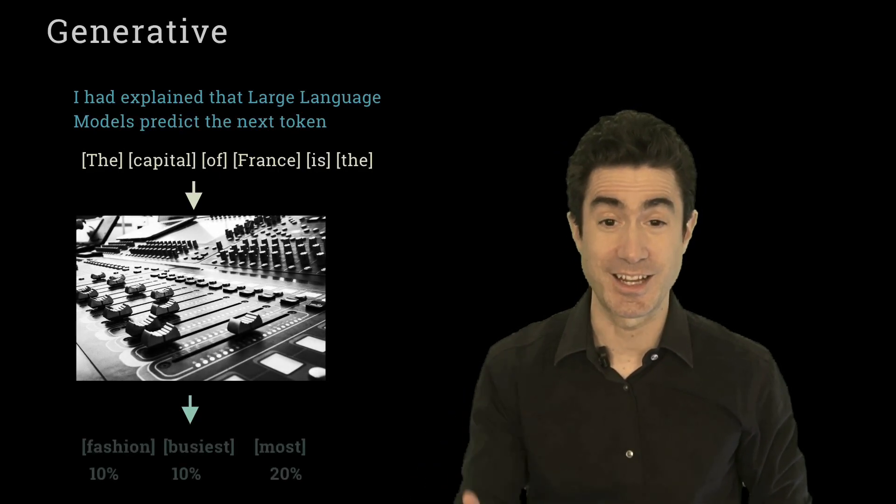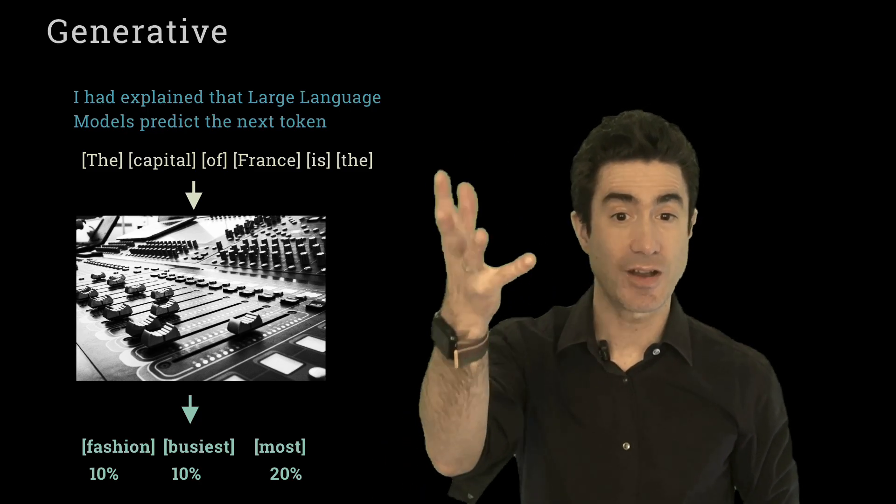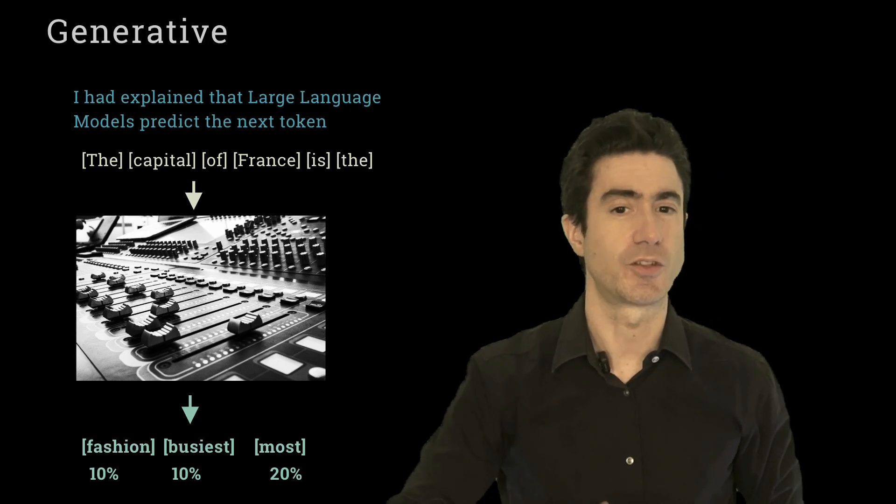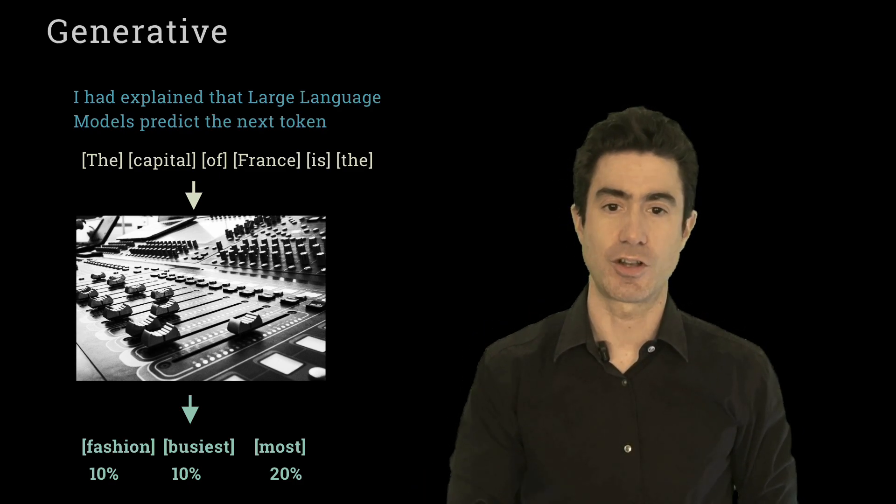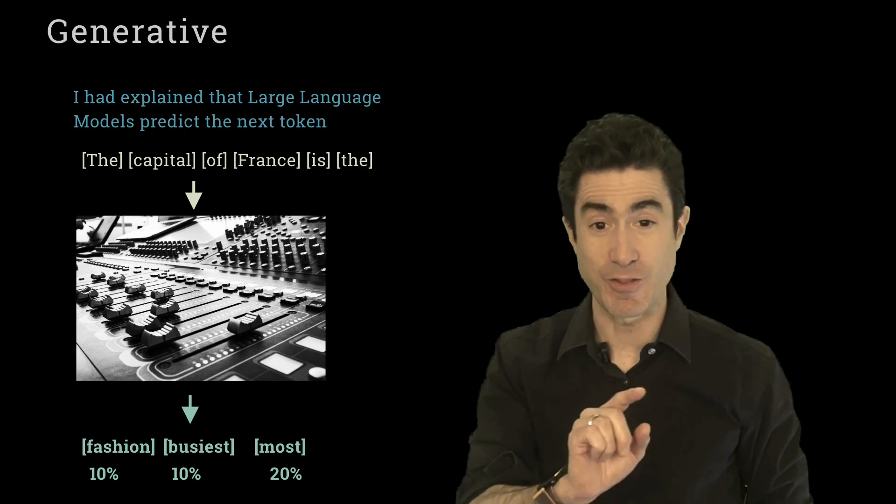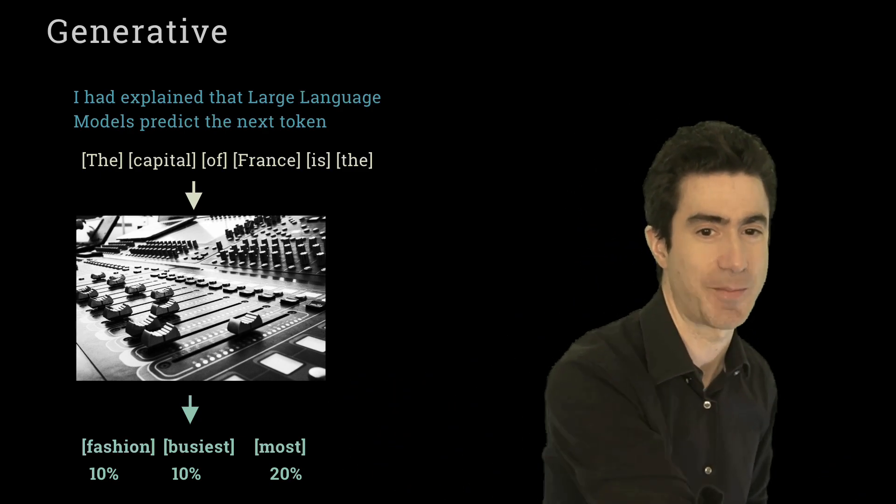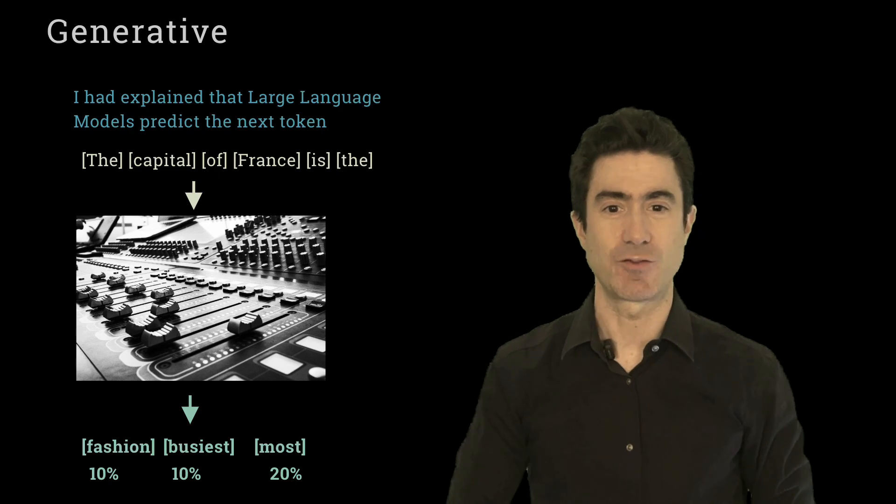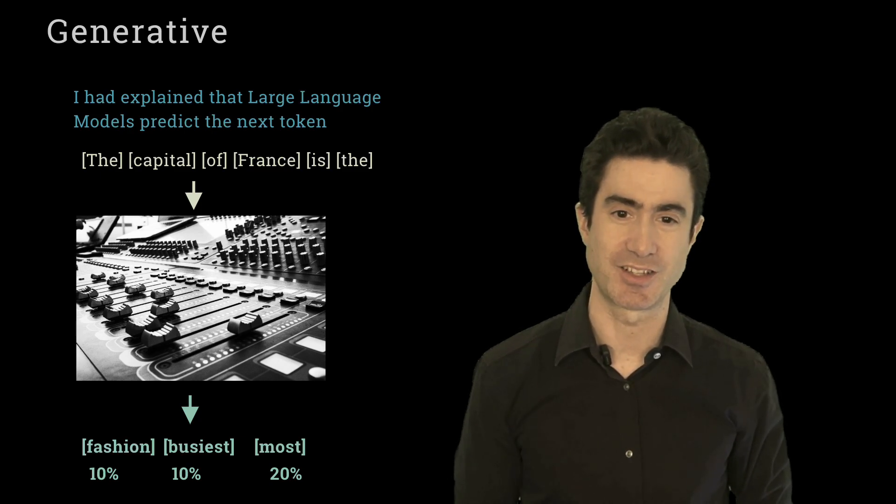And so to illustrate that we can say alright so what would happen then if we picked the word the instead of Paris and what we pass into the model is the capital of France is the. Well then for the next token it will do the same thing. It will look not necessarily at finding one word to choose but rather it will look across its entire vocabulary of possible next tokens and every possible next token even the word gherkin will get some probability. And perhaps it thinks this might be the capital of France is the fashion capital of Europe or the capital of France is the most.